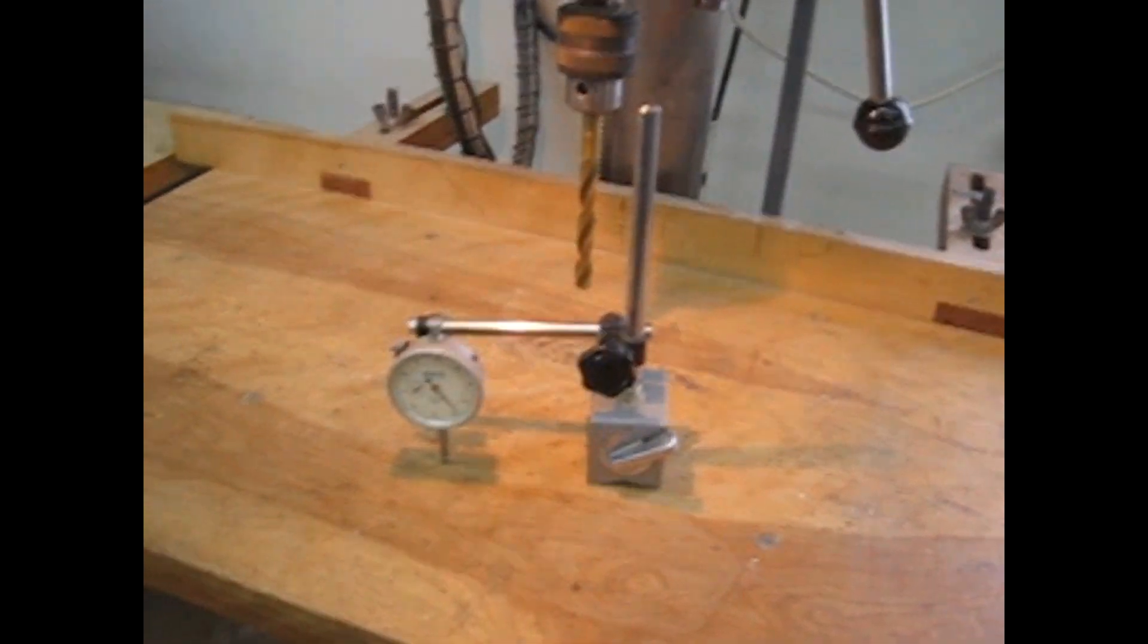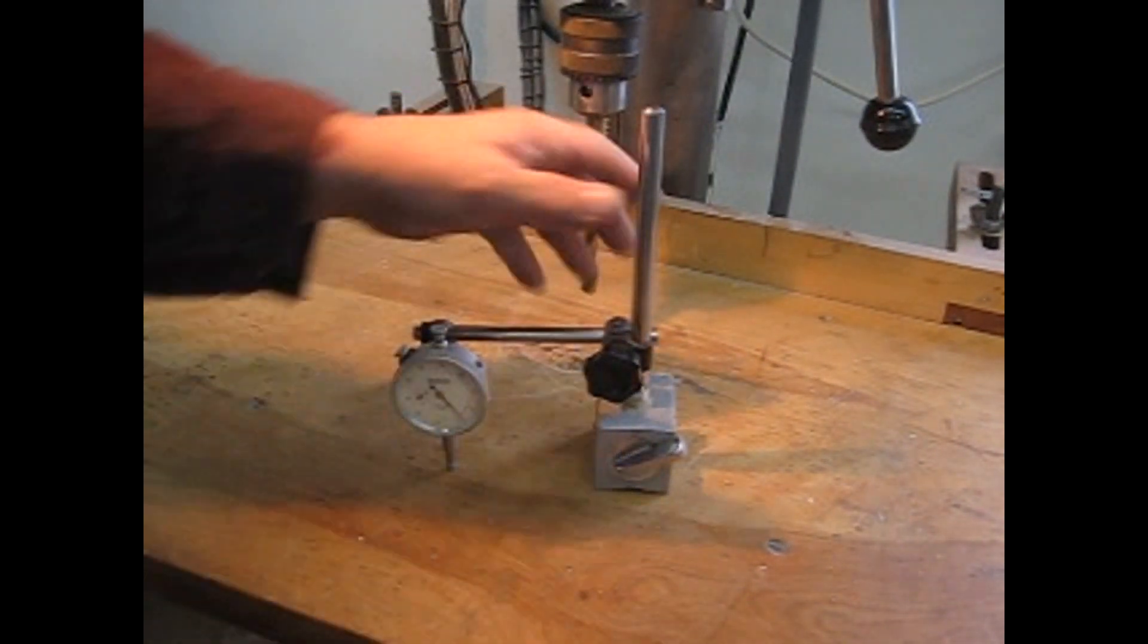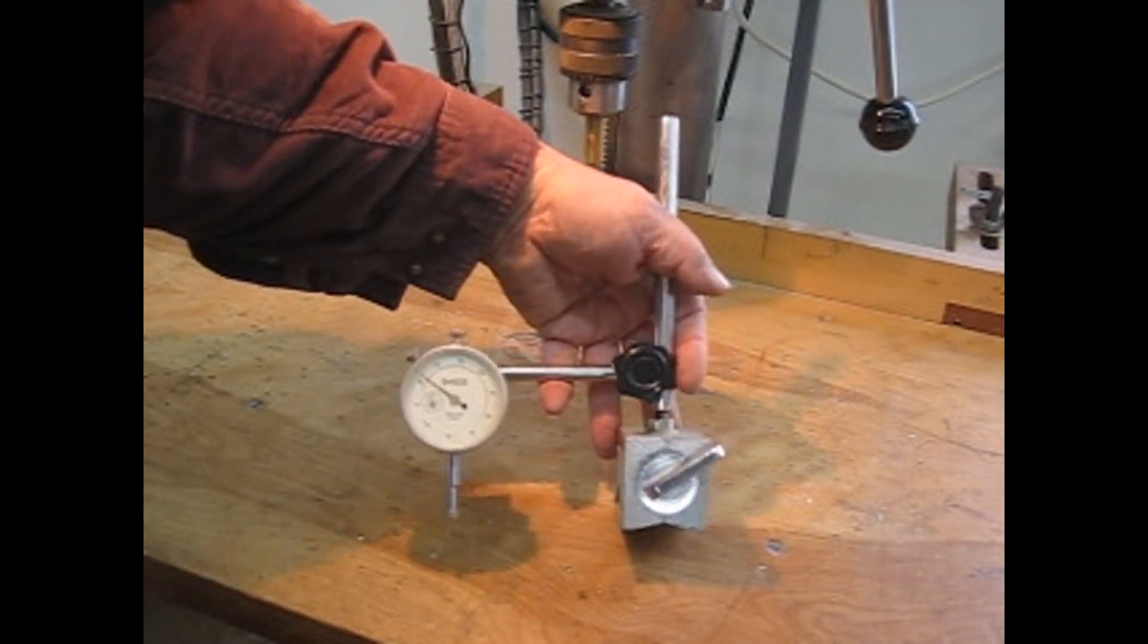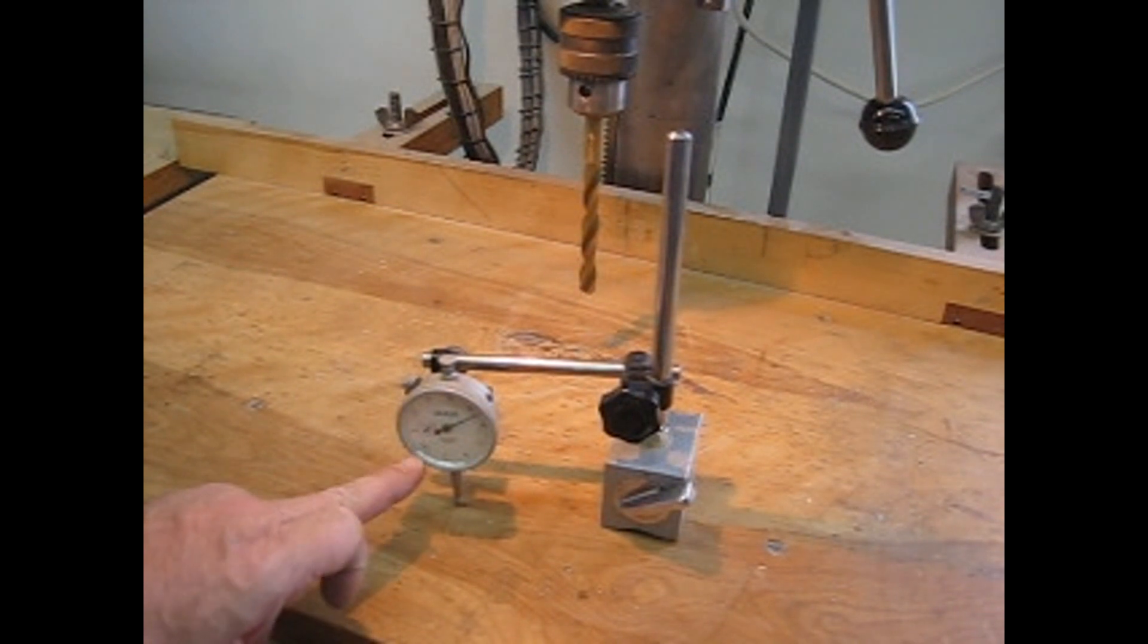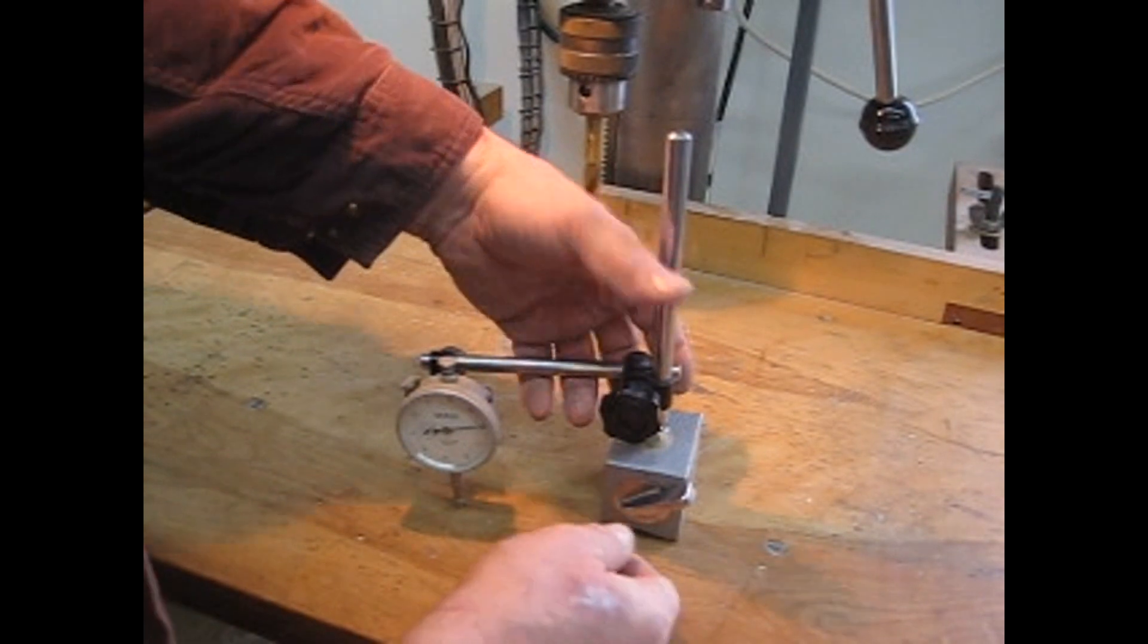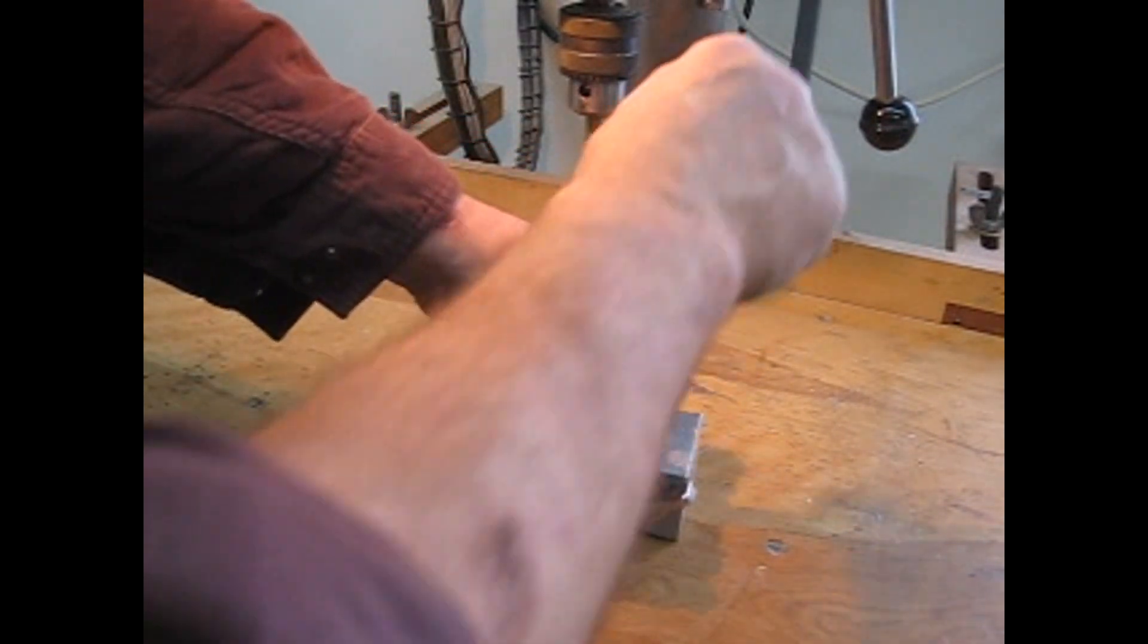These are pretty cheap instruments. This one's a good one, but you can buy a magnetic base and a dial indicator that reads to within 1,000th of an inch at Princess Auto for $25. Watch how you would use that in the drill press.